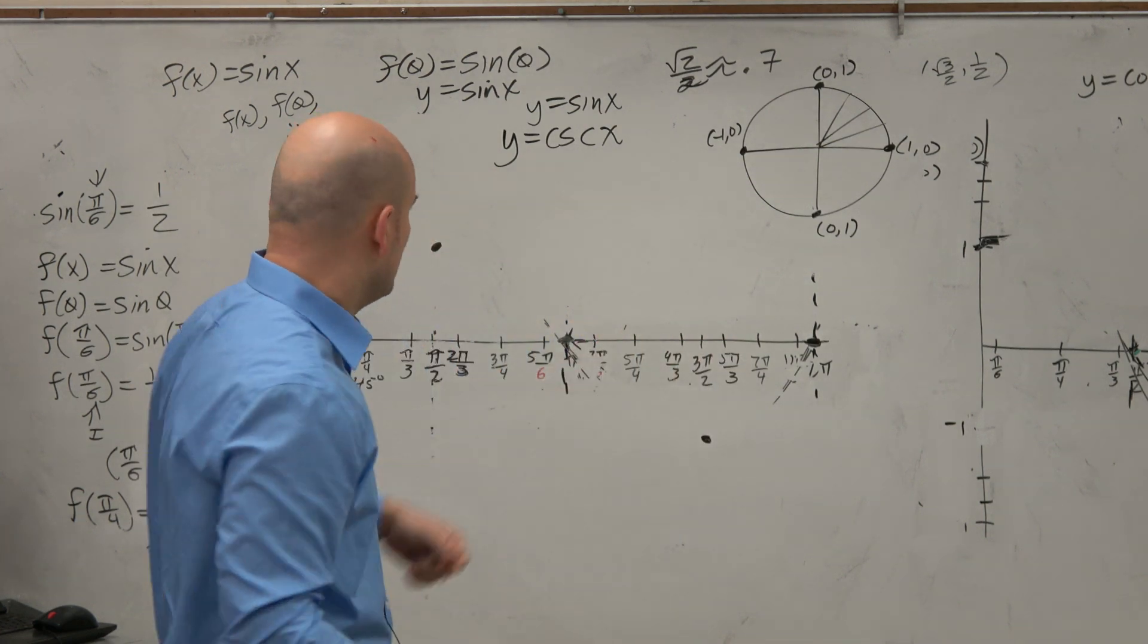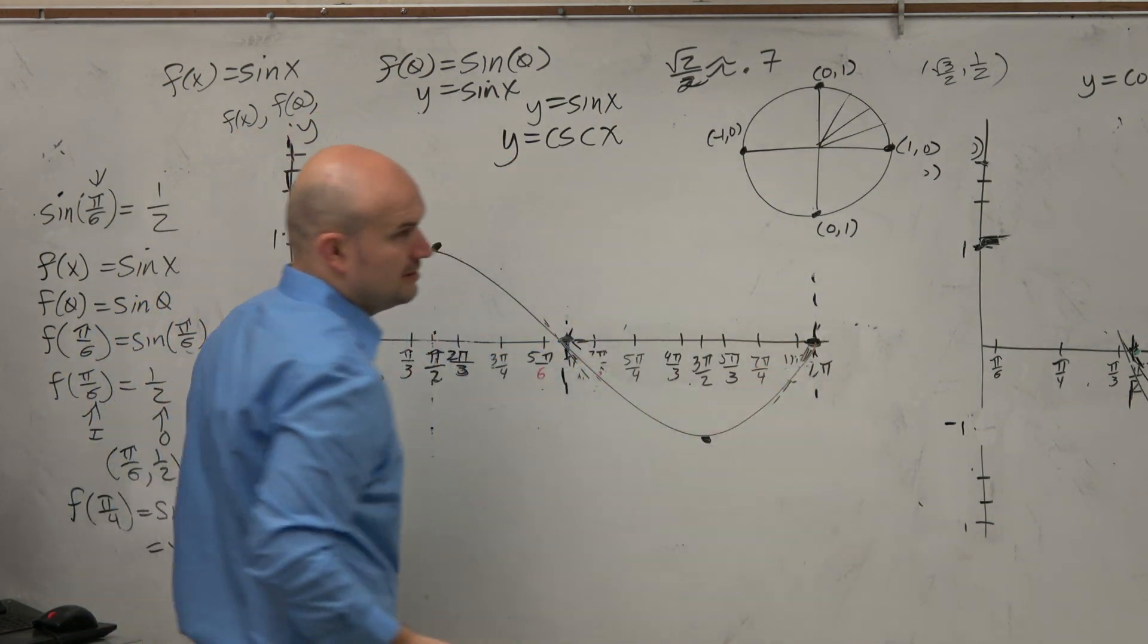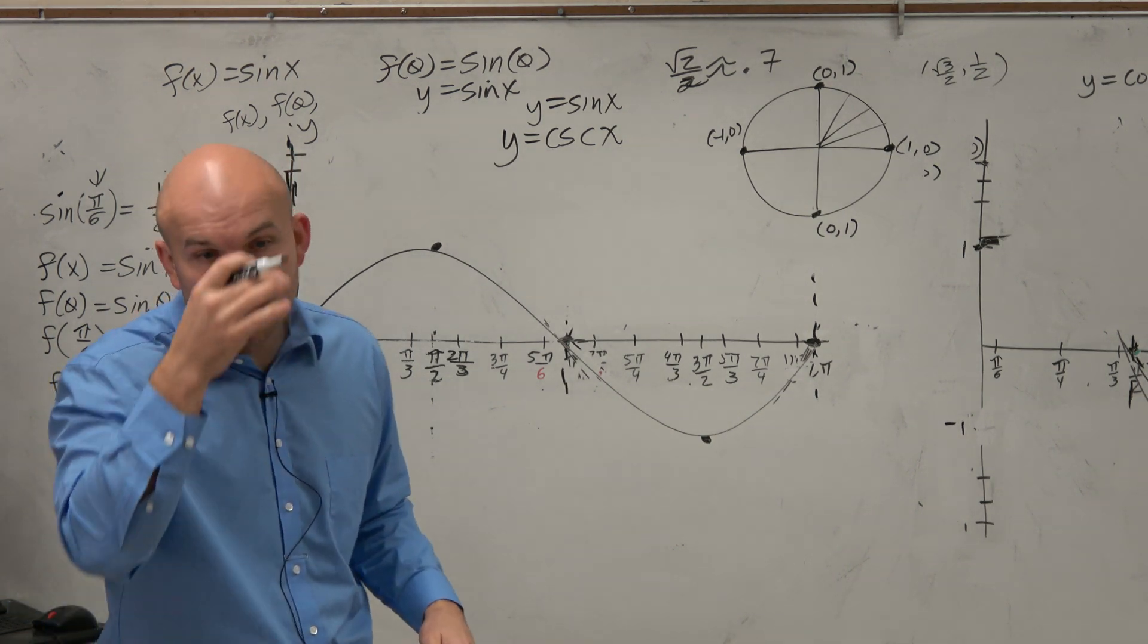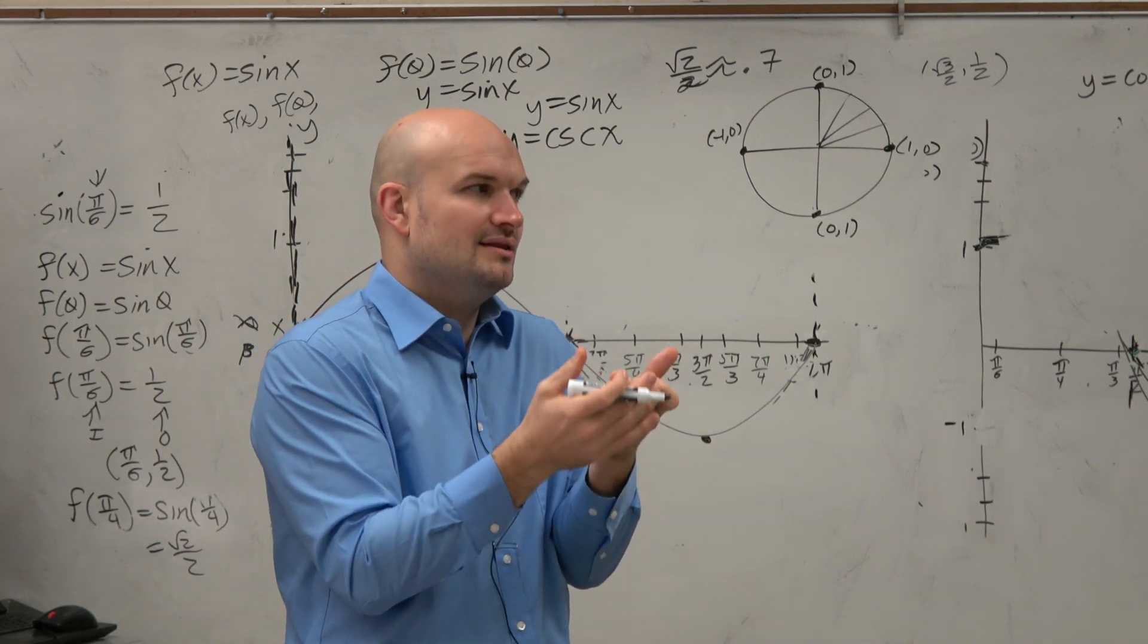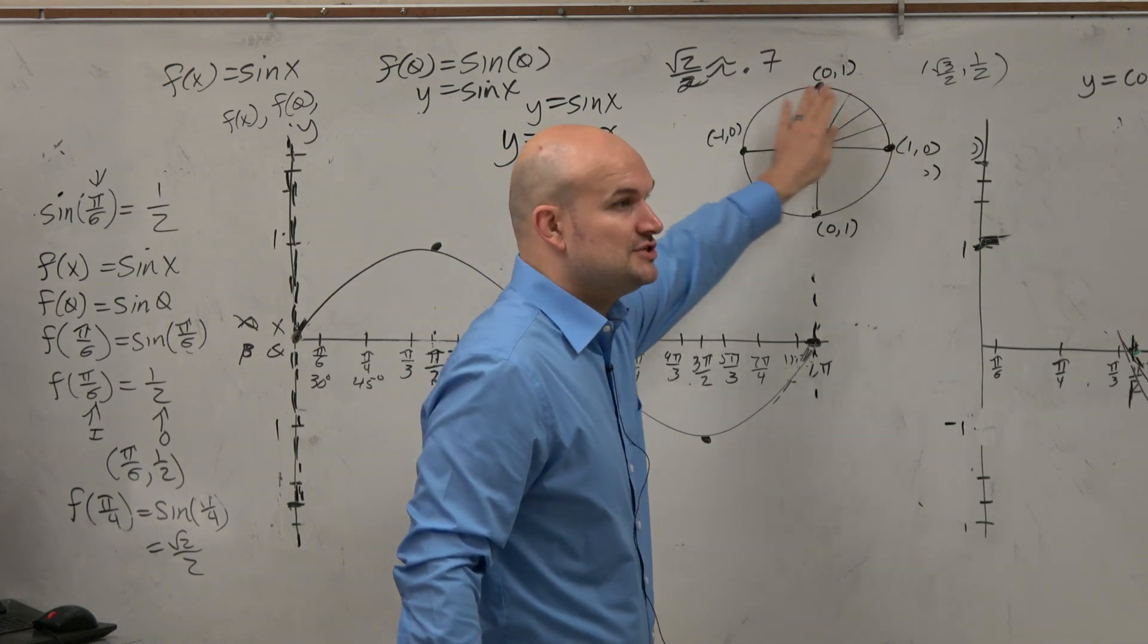By plugging in additional points, we came up with a shape of the graph that looks something like this. Quick little review. All right, so let's do the same process with cosecant, but instead of doing every single point, let's just focus on these major intercepts.